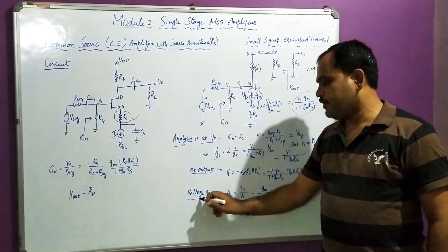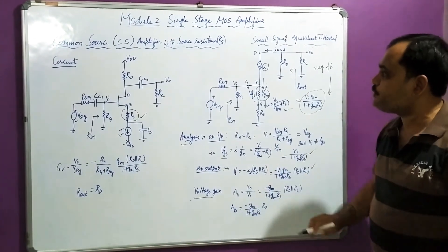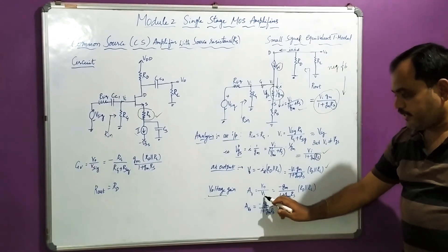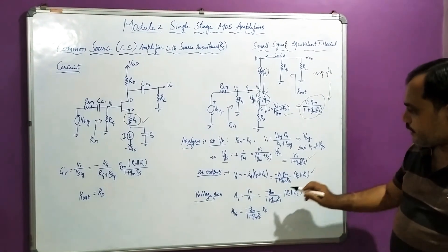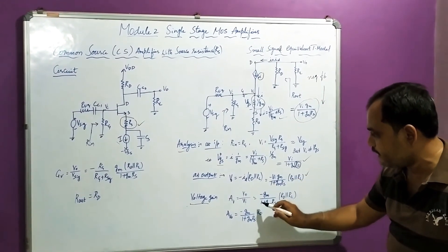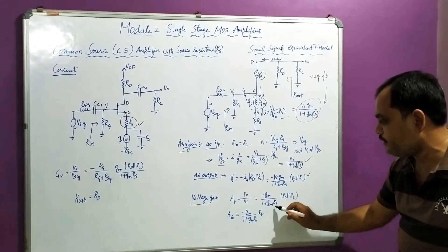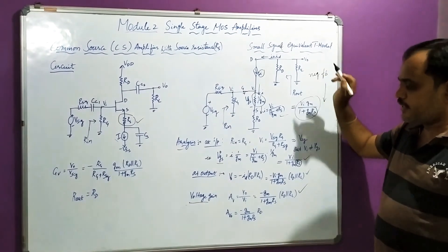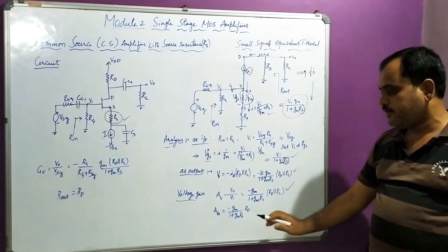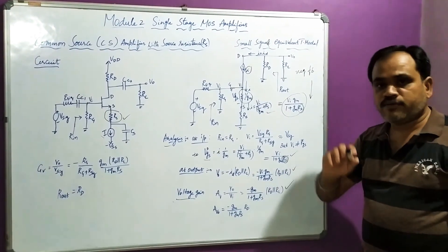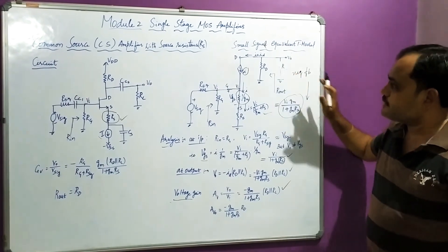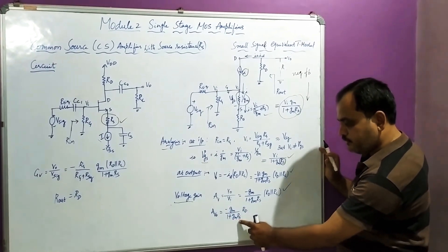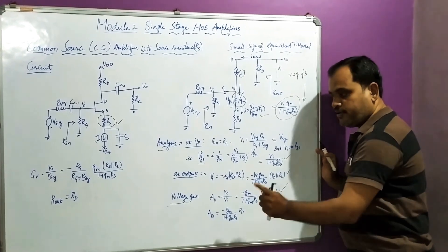This is the output voltage. The voltage gain, V0/Vi, is simply minus Gm/(1 + Gm·RS) times (Rd parallel Rl). For the open-circuit voltage gain, the load resistance Rl is removed, giving minus Gm·Rd/(1 + Gm·RS). This analysis becomes very simple since we have neglected the finite output resistance and channel length modulation.